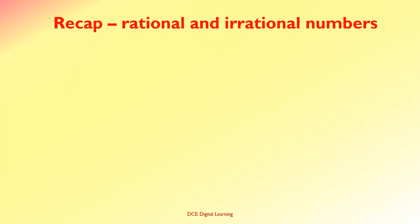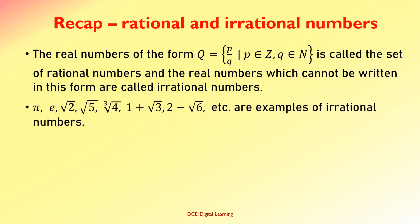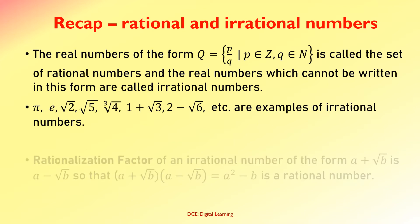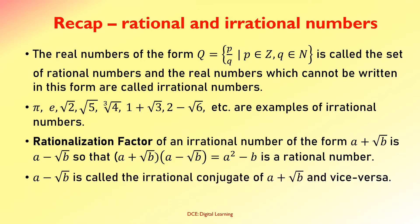First, recall rational and irrational numbers. The real numbers of the form P/Q where P belongs to Z and Q belongs to N are called the set of rational numbers, and the real numbers which cannot be written in this form are called irrational numbers. Pi, e, √2, √5, ∛4, 1+√3, 2−√6, etc. are examples of irrational numbers. The rationalization factor of an irrational number of the form A+√B is A−√B, so that (A+√B)(A−√B) = A²−B, which is a rational number. A−√B is called the irrational conjugate of A+√B and vice versa.